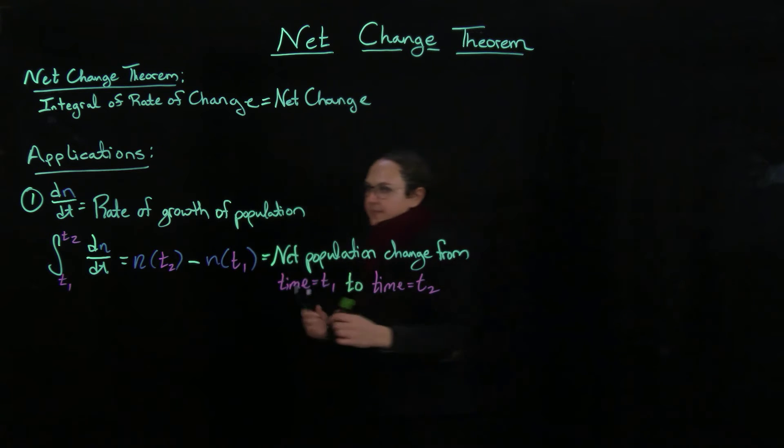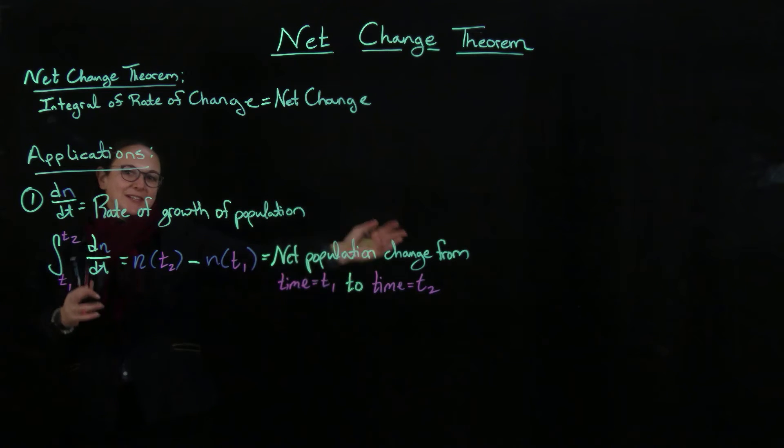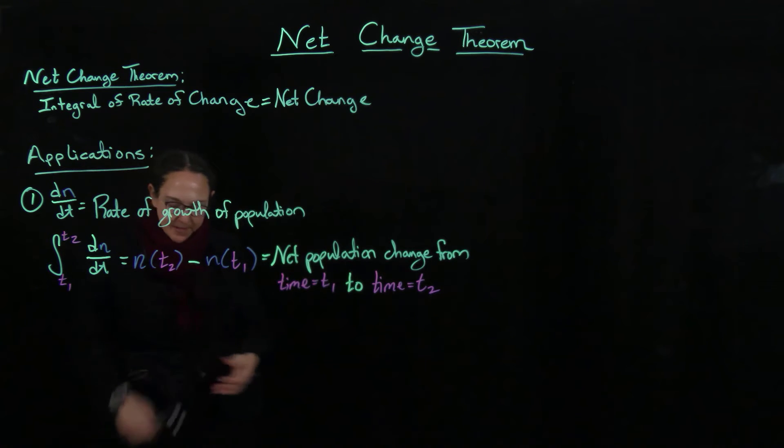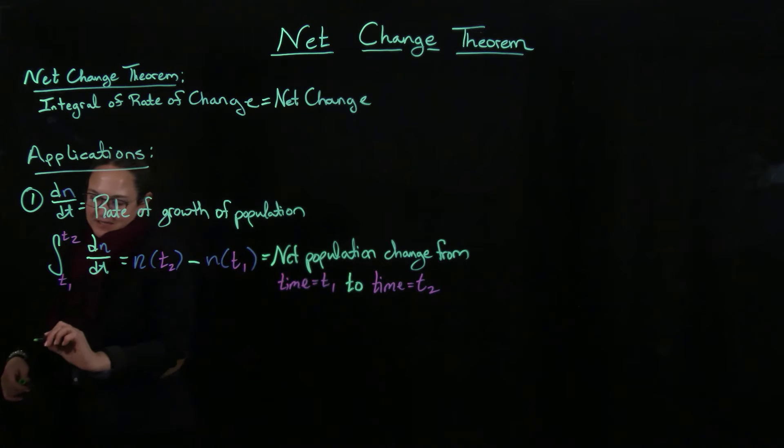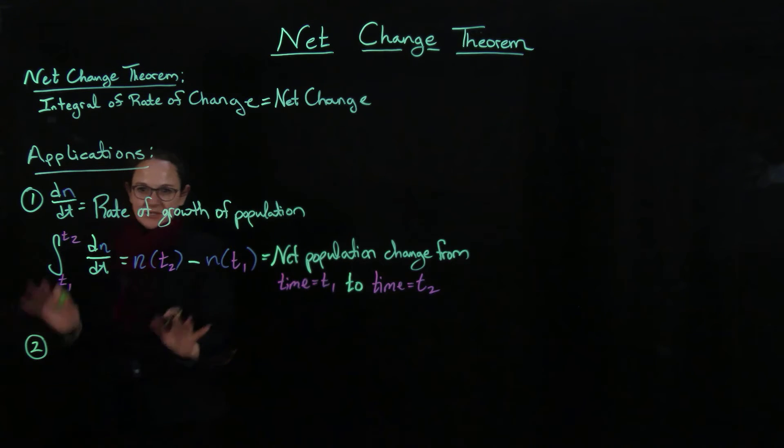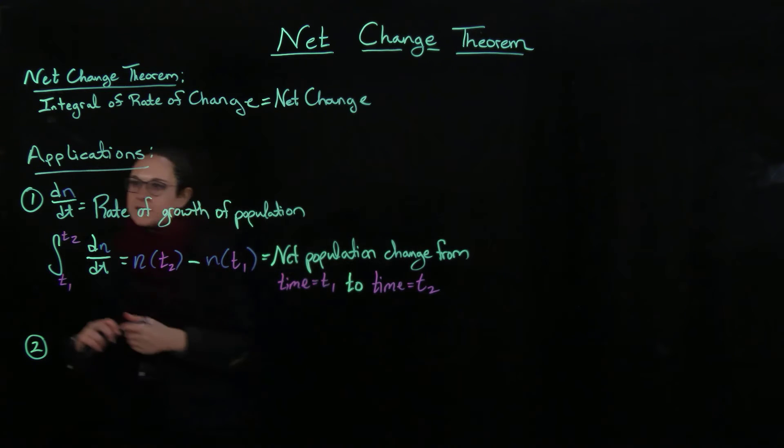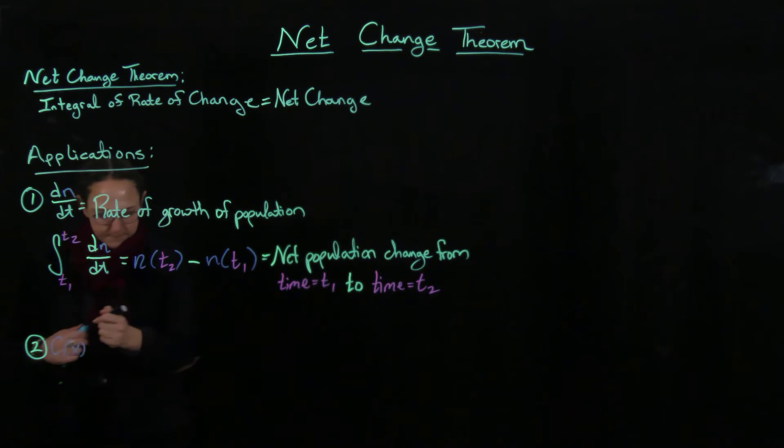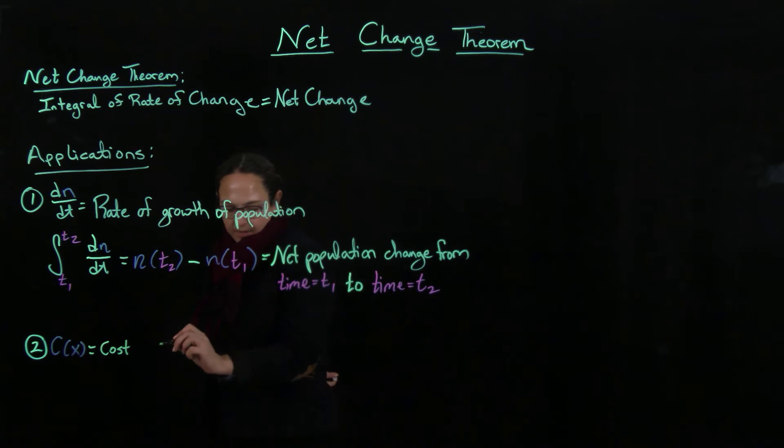And here's another example. So this is related to life right now, with like the population of a disease spreading or something like this. But there's also many other examples this could show up. In fact, the net change theorem works a lot also in physics and chemistry and so on. But I tried to find two examples that I thought would be the most relevant for the things that you're studying. And then c of x would equal the cost of producing x units of a commodity.